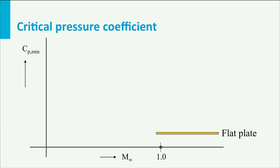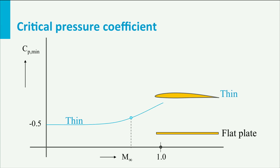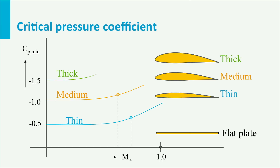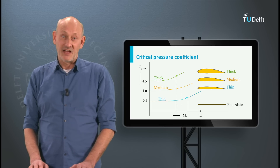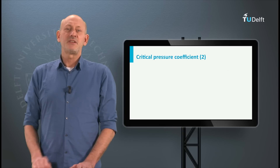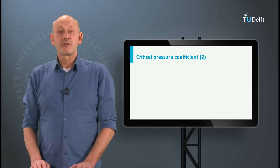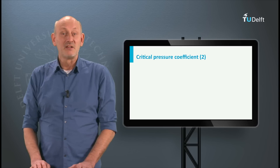This is shown in the following graph. For a flat plate with no speed-up over the surface, the critical Mach number is equal to the free stream Mach number, so M critical is 1. If we go up in thickness, the critical Mach number goes down, as shown by the points on the curve. Also shown is the effect of compressibility according to the Prandtl-Glauert correction, so with increasing Mach number the Cp and the minimum Cp go to more negative values. For each of the four examples, the critical Cp has a different value.